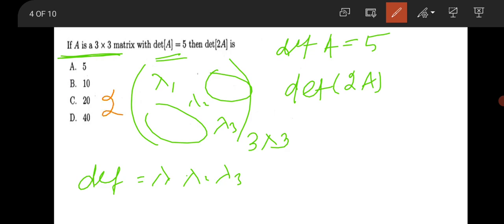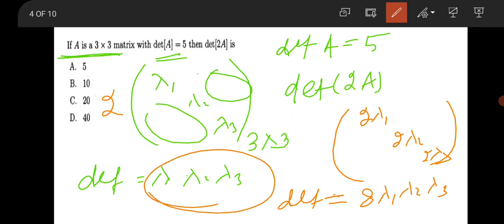Your determinant will be λ1 λ2 times λ3. Now you multiply this matrix with 2, so your new matrix will be in the form like 2λ1, it will be 2λ2 and 2λ3. So now your determinant becomes 2 times 2 times 2, that is 8 λ1 λ2 λ3.